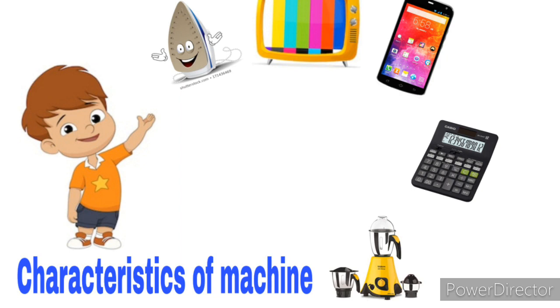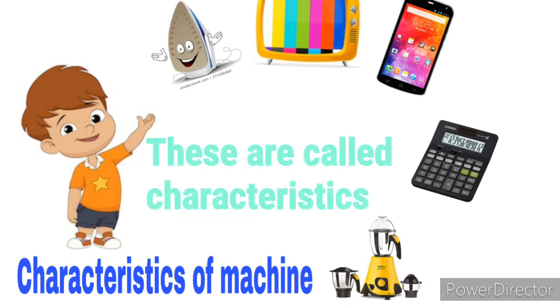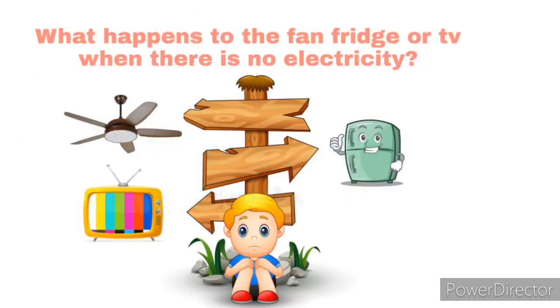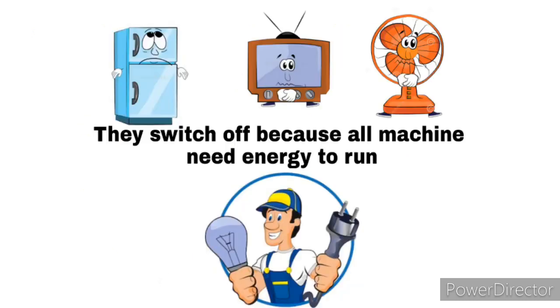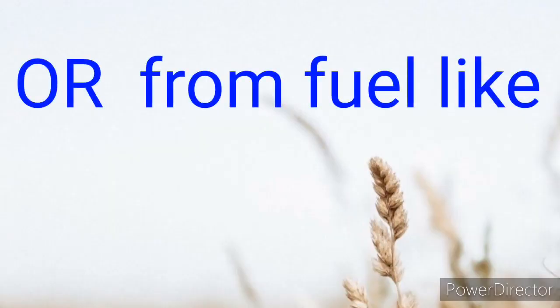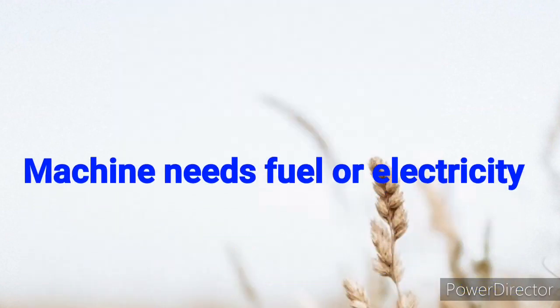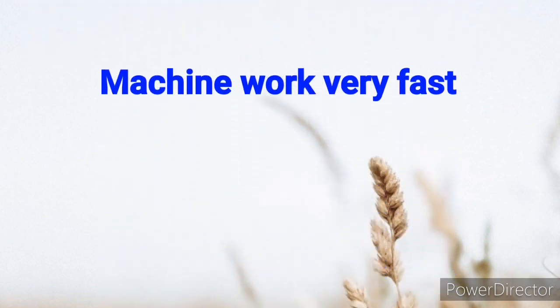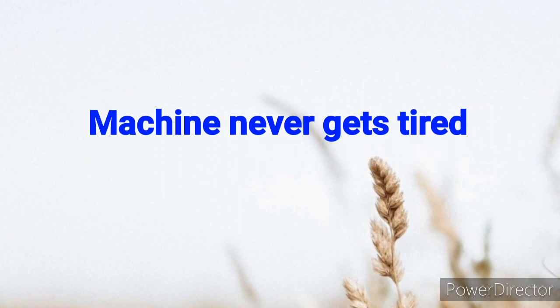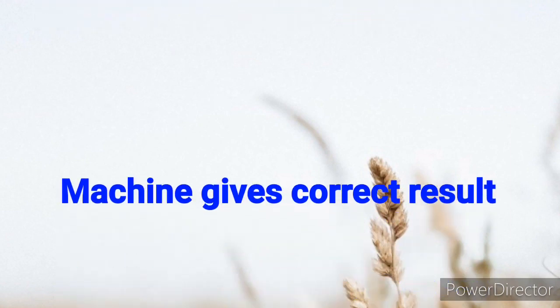Characteristics of Machine: All these useful machines have some common features, called characteristics. What happens to the fan, fridge, or TV when there is no electricity? They switch off, because all machines need energy to run — either from electricity like a fridge, or from fuel like petrol in a car. Machines need fuel or electricity. Machines work very fast. Machines never get tired. Machines don't have any feelings. Machines give correct results.